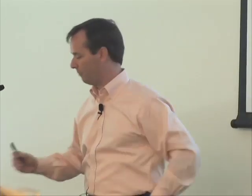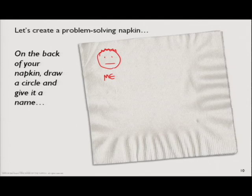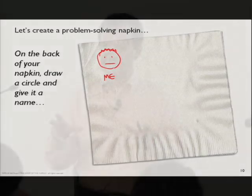In my book, The Back of the Napkin, there are several tools that help us think better from a visual perspective. I want to focus on just one of them for now. What I'd like you to do on your napkin is draw a little circle in the upper left corner about this big. Label that circle and call it 'me' — and make it look a little bit like you. Every time I talk to someone about creating a problem-solving picture, I tell them to start in exactly the same way: draw a circle somewhere on the page, relatively small, and give it a name.